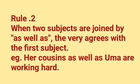Rule 2: When two subjects are joined by 'as well as', the verb agrees with the first subject. Example: 'Her cousins as well as the woman are working hard.' Here, the verb agrees with the first subject, 'her cousins.'